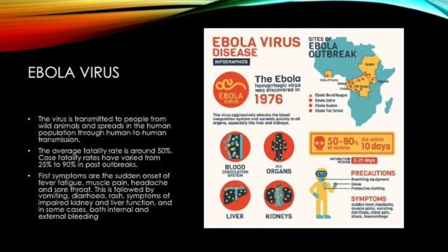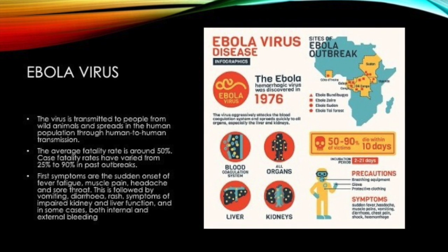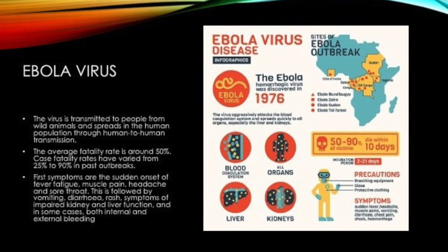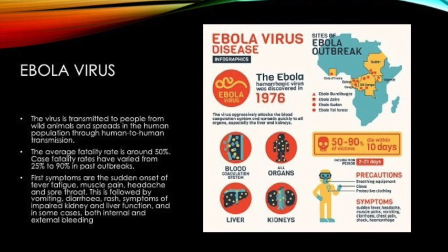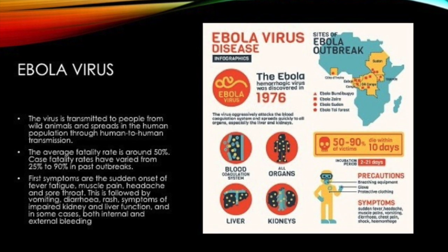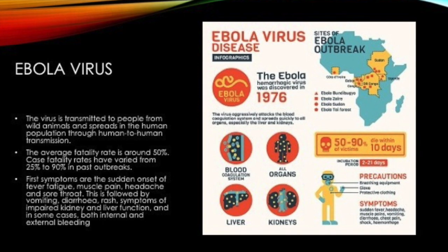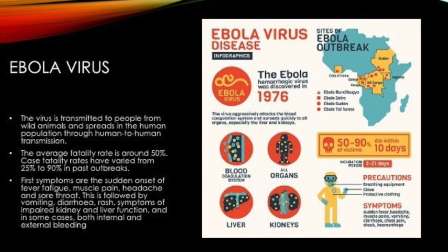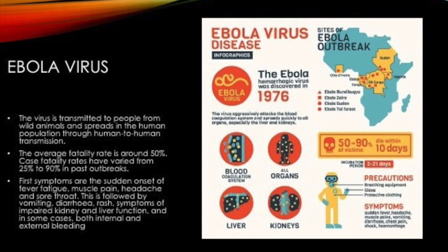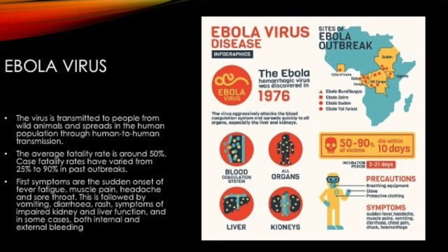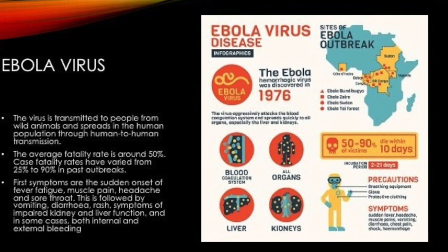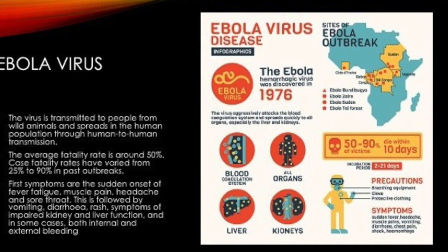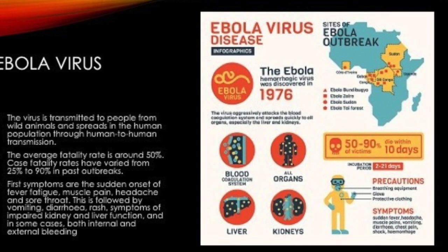Ebolavirus. The virus is transmitted to people from wild animals and spreads in the human population through human-to-human transmission. The average fatality rate is around 50%, with case fatality rates having varied from 25 to 90% in past outbreaks. First symptoms are the sudden onset of fever, fatigue, muscle pain, headache, and sore throat. This is followed by vomiting, diarrhea, rash, symptoms of impaired kidney and liver function, and in some cases, both internal and external bleeding.